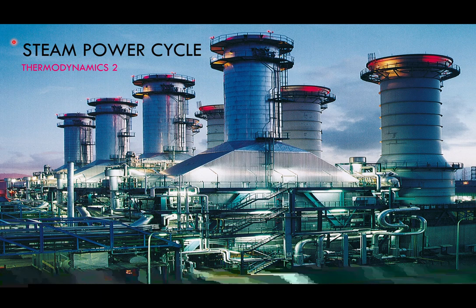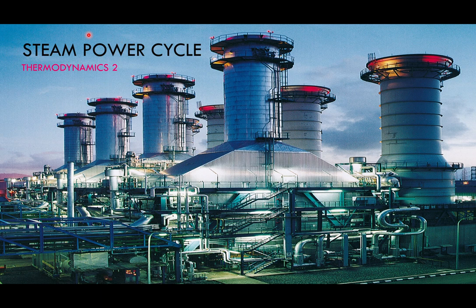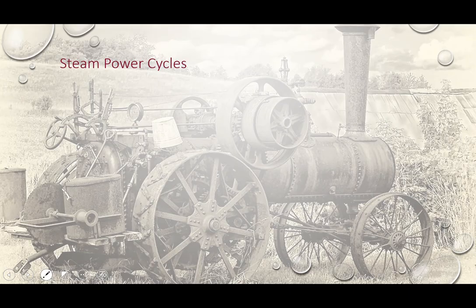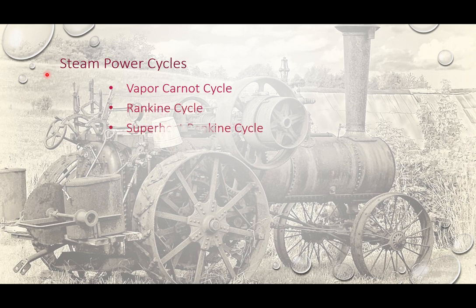Vapor Power Cycles, or Steam Power Cycles, consist of: 1) Carnot, 2) Rankine, 3) Superheat Rankine, then Reheat, Regenerative, and Combined Regenerative.